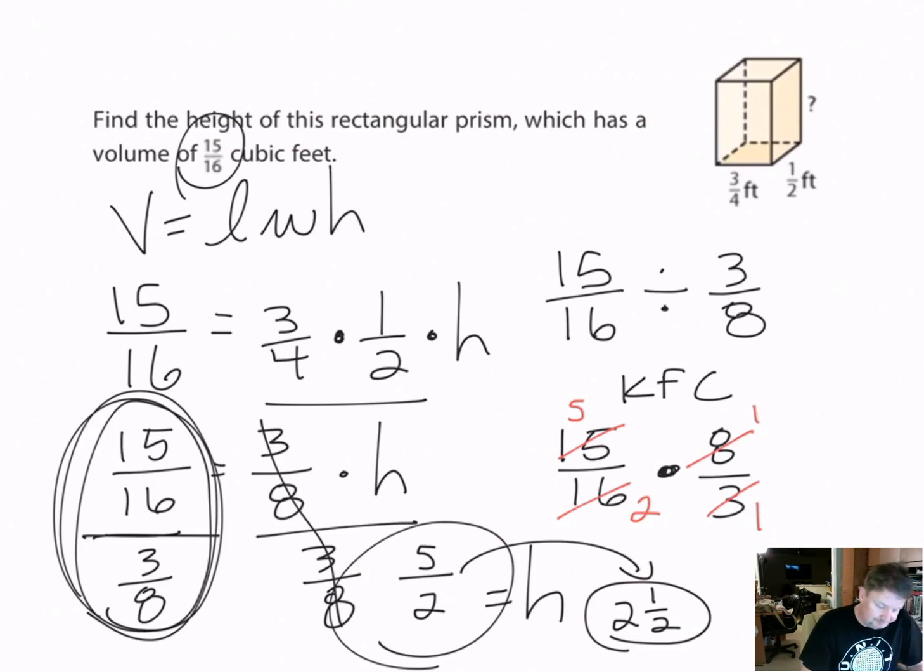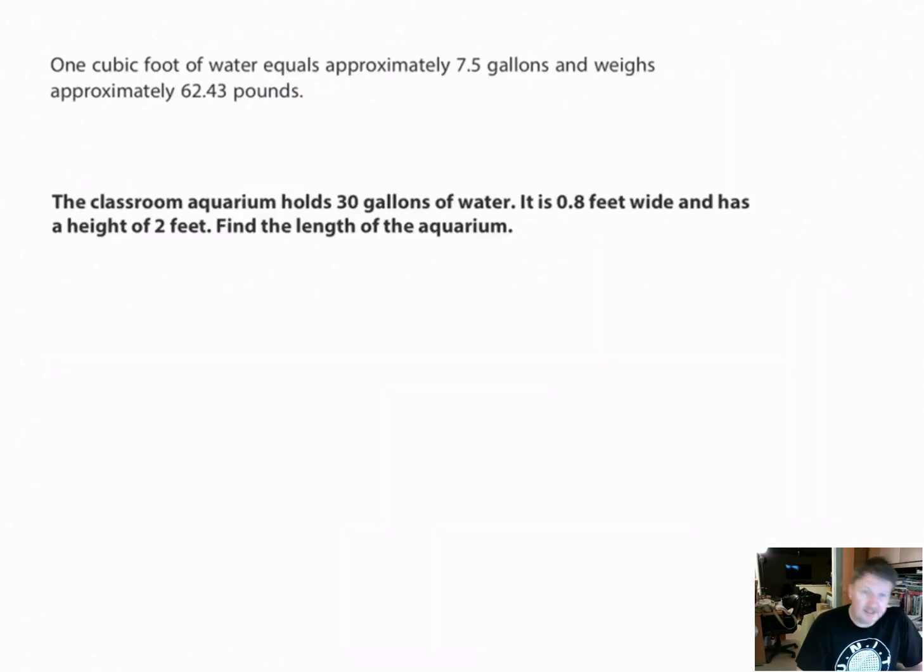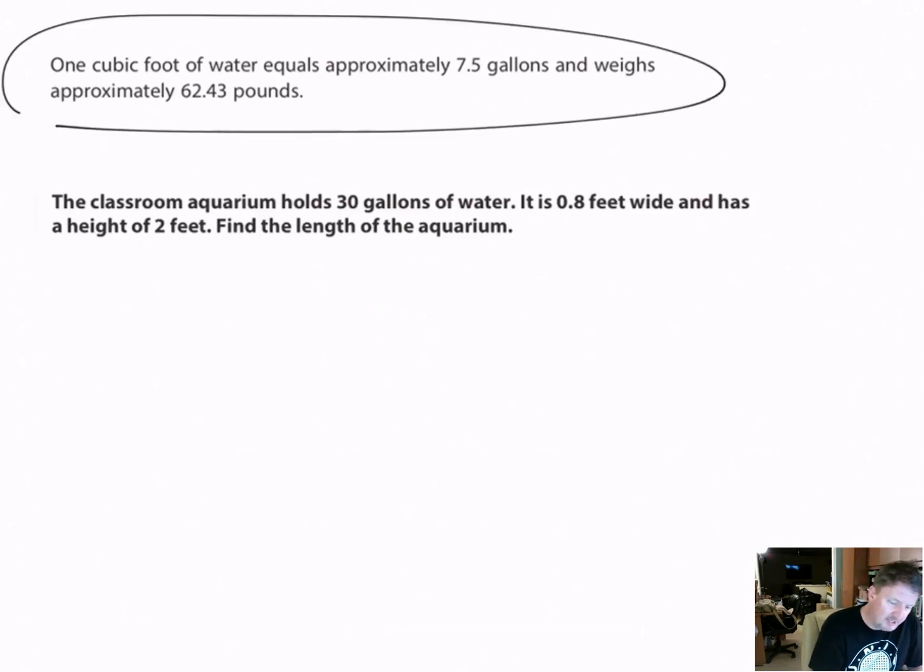Next problem. This one's a little trickier, this is a two-step problem. It says one cubic foot of water equals approximately 7.5 gallons and weighs approximately 62.43 pounds. That tells you information you're going to need to solve the problem.